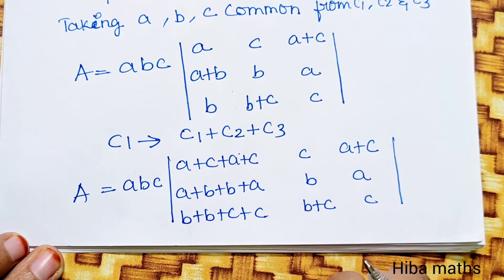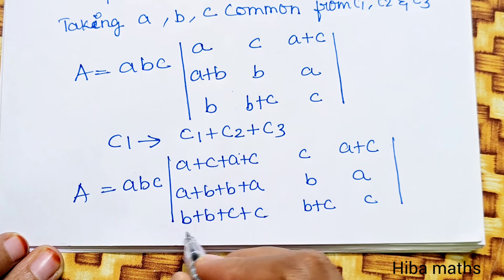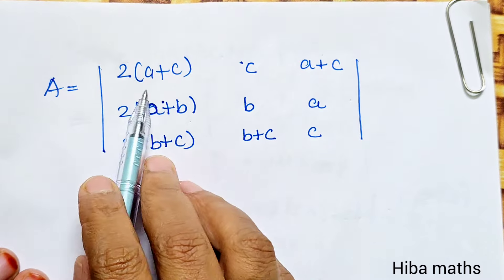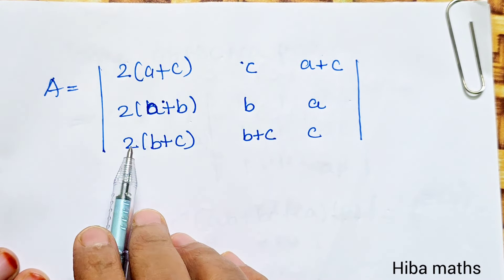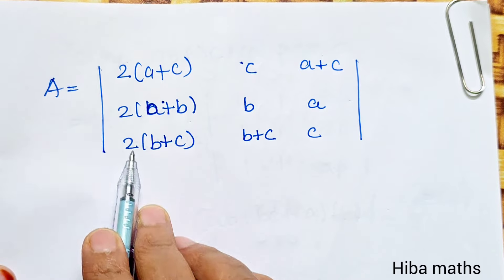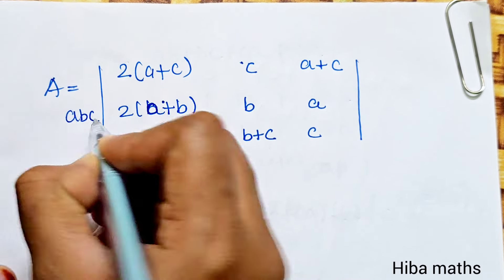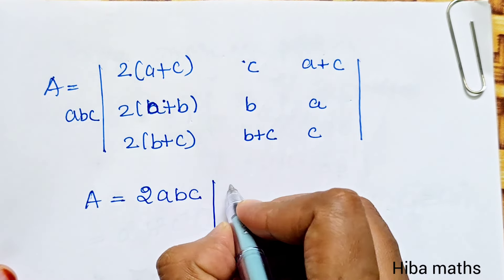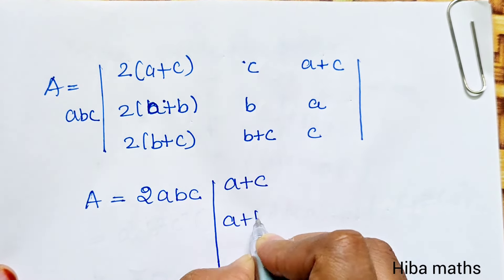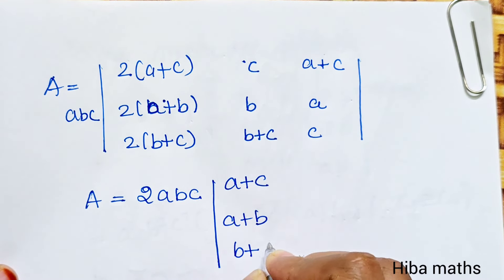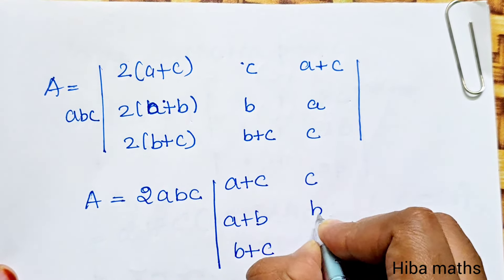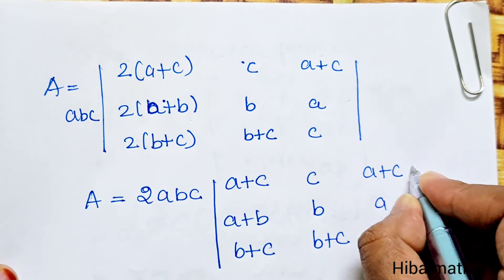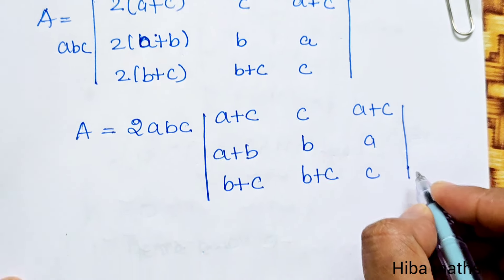Now we have A plus C, here we have A plus B, and B plus C. The last step: 2 times of A plus C, 2 times of A plus B, 2 times of B plus C. Now we have A plus B plus C in each entry.